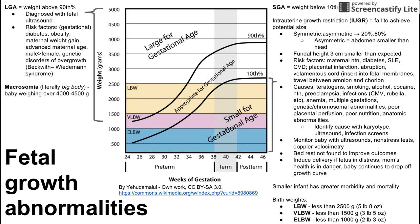Another term to know is macrosomia, which literally means big body. The definition is somewhat arguable, but it's usually agreed to be a baby weighing over 4,000 to 4,500 grams.